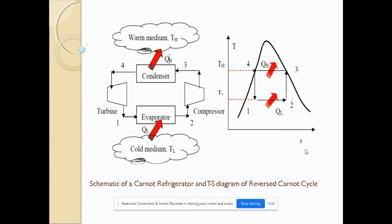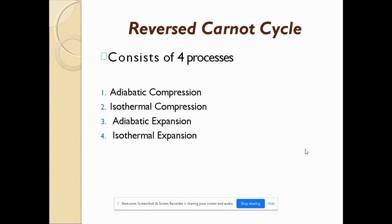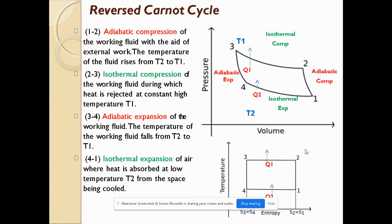This is the temperature-entropy (T-S) diagram obtained. Moving on to the reverse Carnot cycle, it consists of four processes: adiabatic compression, isothermal compression, adiabatic expansion, and isothermal expansion — two adiabatic and two isothermal processes, and two compression and two expansion processes. Process 1 to 2 is adiabatic compression, 2 to 3 is isothermal compression, 3 to 4 is adiabatic expansion, and 4 to 1 is isothermal expansion.